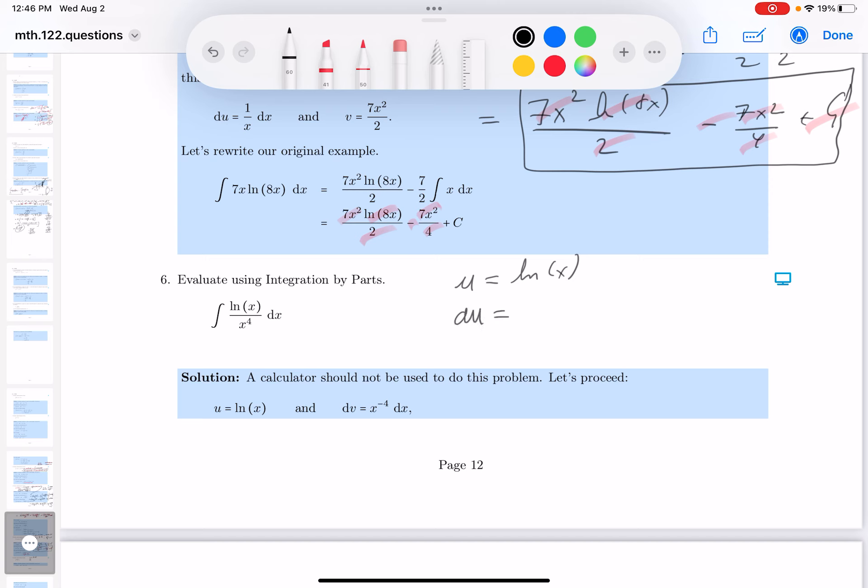So what do you get over here? du would be 1 over x dx. Then I would take x to the minus 4 dx to be the dv. The reason being it's easier for me to handle it. What do I do? Increase the exponent by 1, so it's minus 3 over minus 3. So I'll simply say this over here, and that's what the v is going to be equal to. Let's write it down.